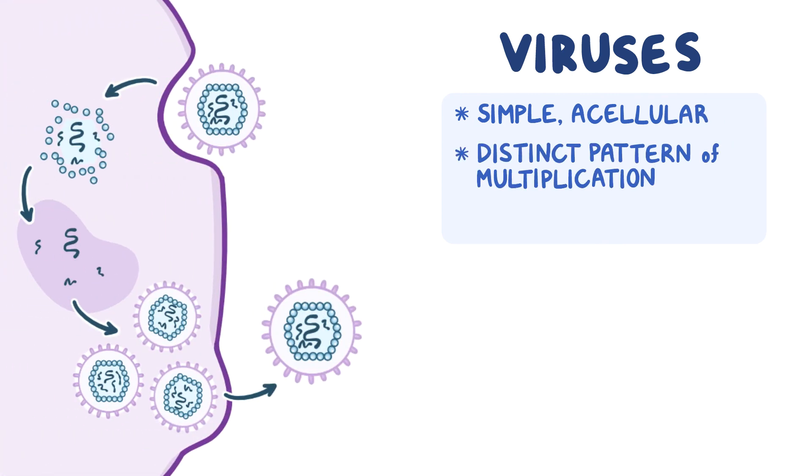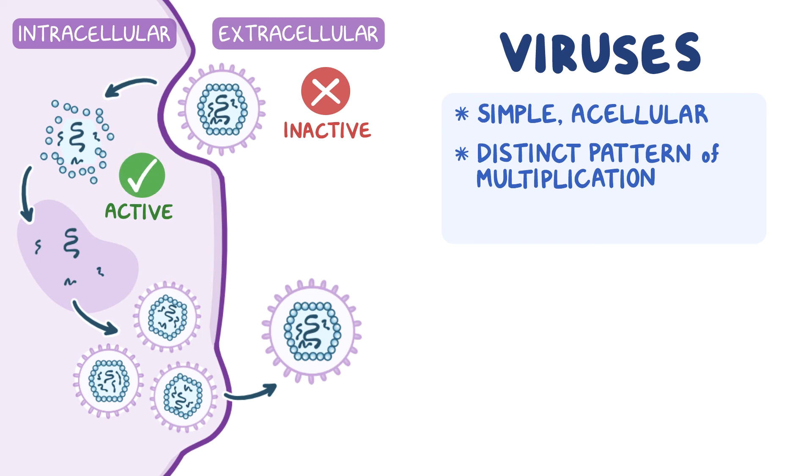As a quick recap, viruses are a unique group of infectious agents with a simple acellular organization and a distinct pattern of replication. They can exist either extracellularly, where the virus is inactive and isn't capable of reproducing, or intracellularly, where the capsid is removed and the virus becomes active. A virus in the extracellular state is called a virion and consists of a protein coat called a capsid, which protects the viral genome and aids in its transfer between host cells. The capsid is surrounding a nucleic acid core, which contains the genetic material or the viral genome, which can be either DNA or RNA.